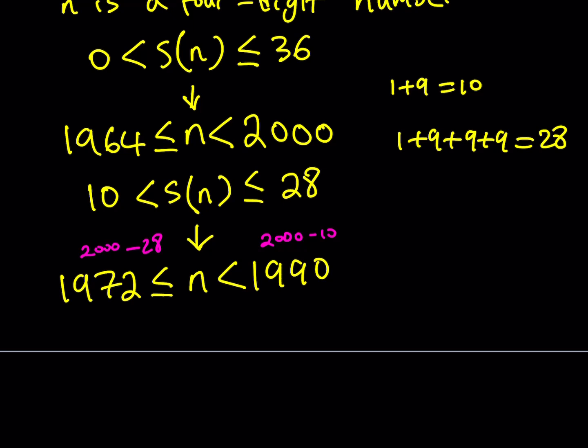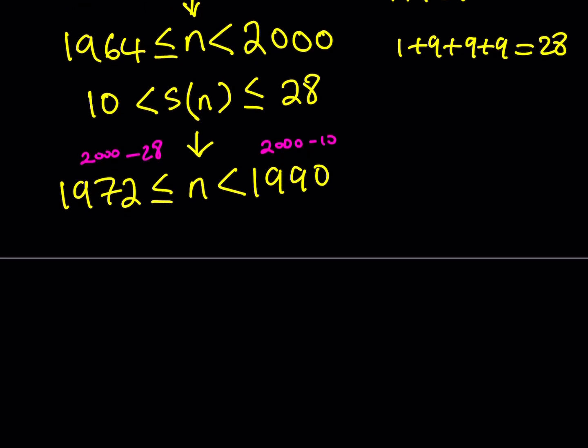So we did basically get some boundaries for n finally. So at this point, I'm going to split this problem up into two cases. First case is going to involve the 1970s. So let n equals 1970 plus k, where k is between 2 and 9 inclusive. This means that we're basically considering all the numbers that are 1972 through 1979.